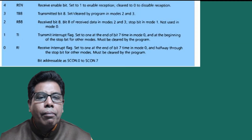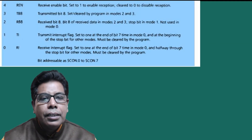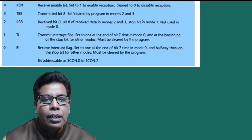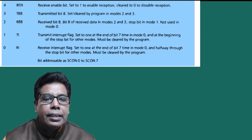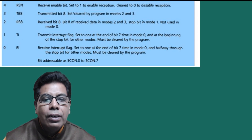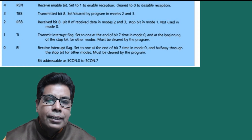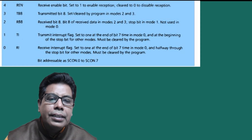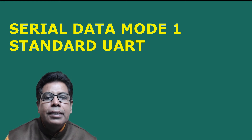Bit 5, SM2, is used for multiprocessor communication — set or cleared by the program to enable multiprocessor. Bit 4, REN, is the receive enable bit. Bit 3, TB8, is for transmitted bit 8, and RB8 is for received bit 8. TI is the transmit interrupt flag, set to 1 at the end of bit 7 time in Mode 0 and at the beginning of the stop bit for other modes — this is the most important flag which must be cleared in the program. The last bit, RI, is the receive interrupt flag.